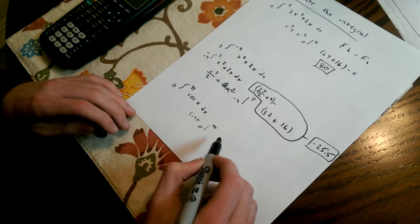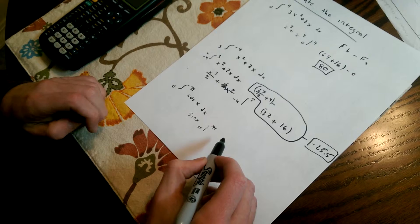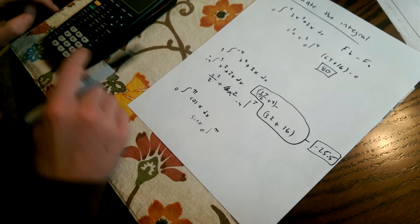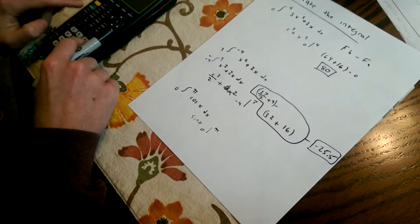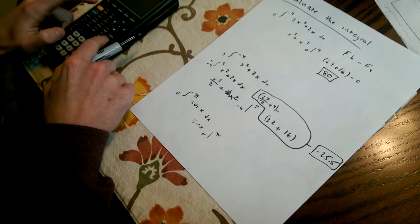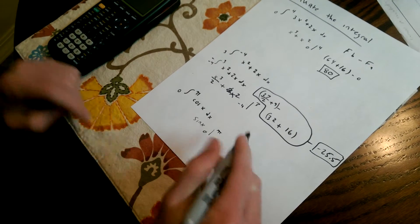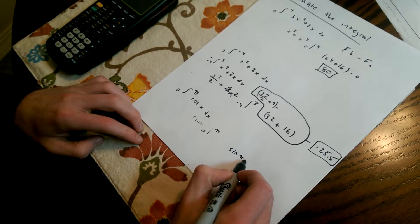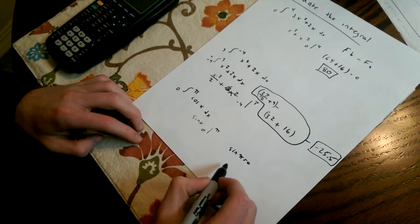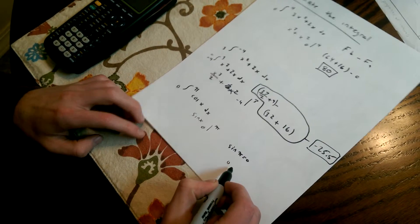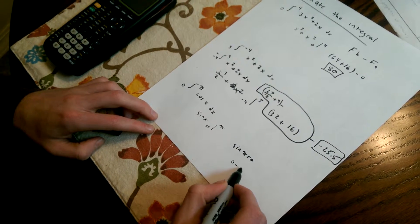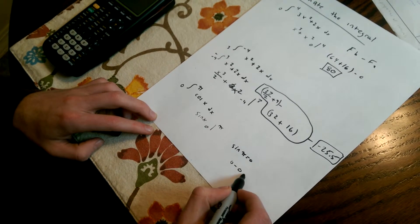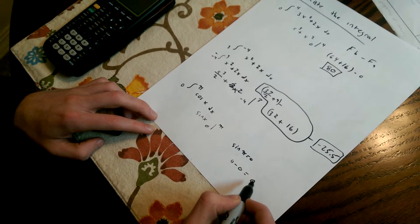Sine of zero — or sine of pi is zero. Sine of pi is zero. So zero minus sine of zero, which is also zero. So zero minus zero is zero. The area under that curve is zero.